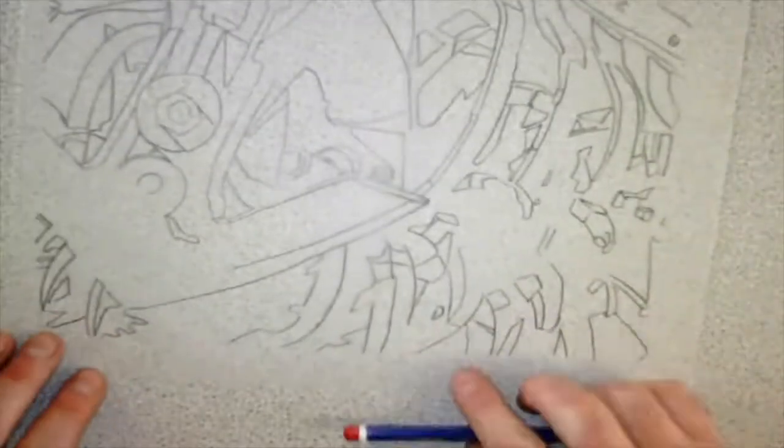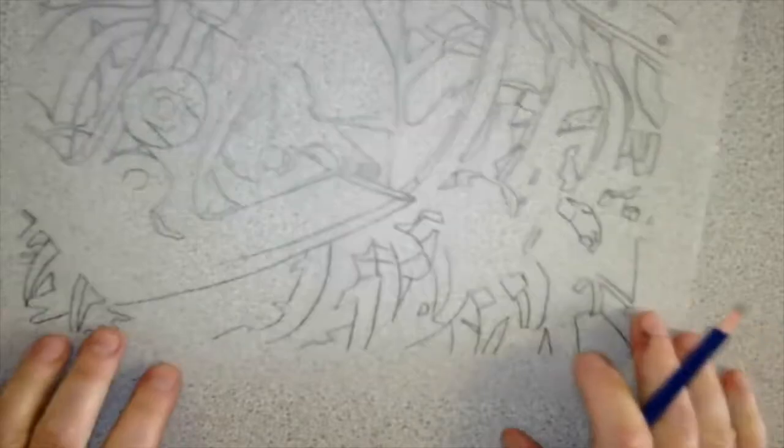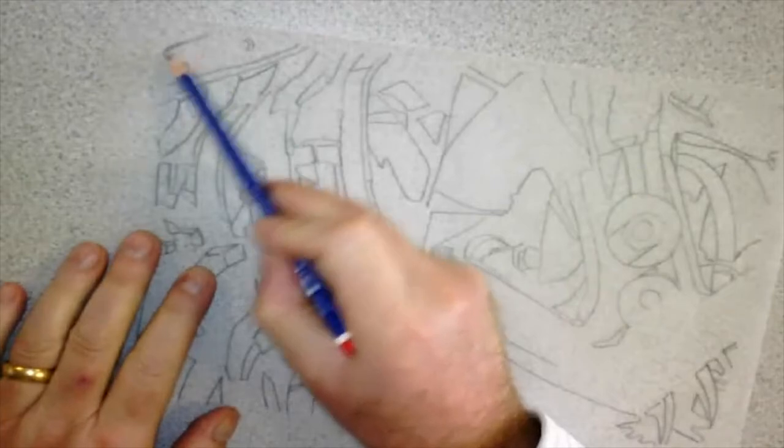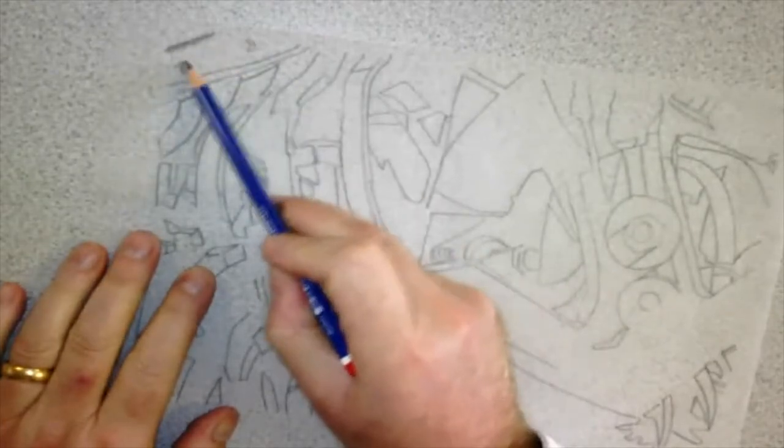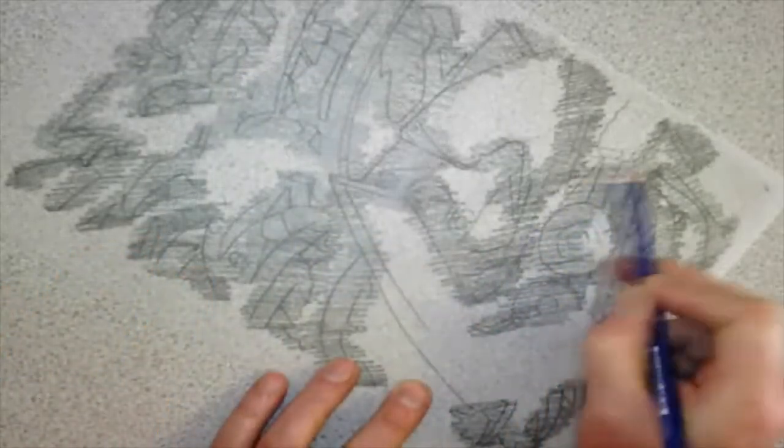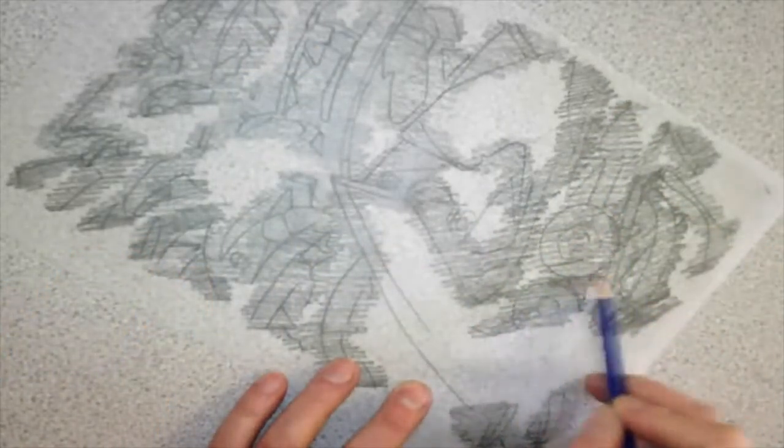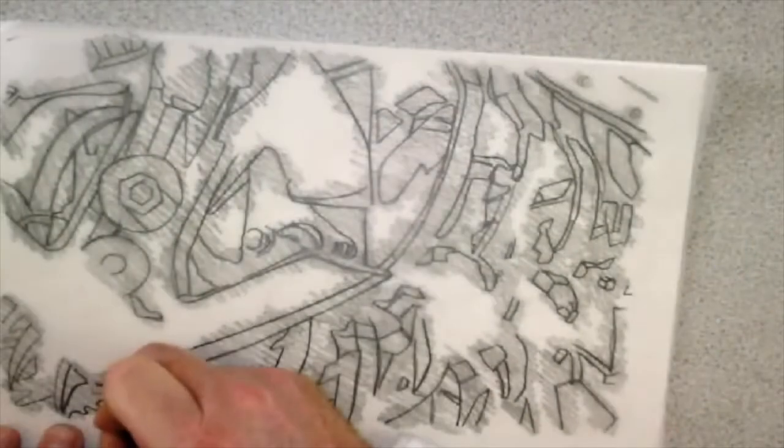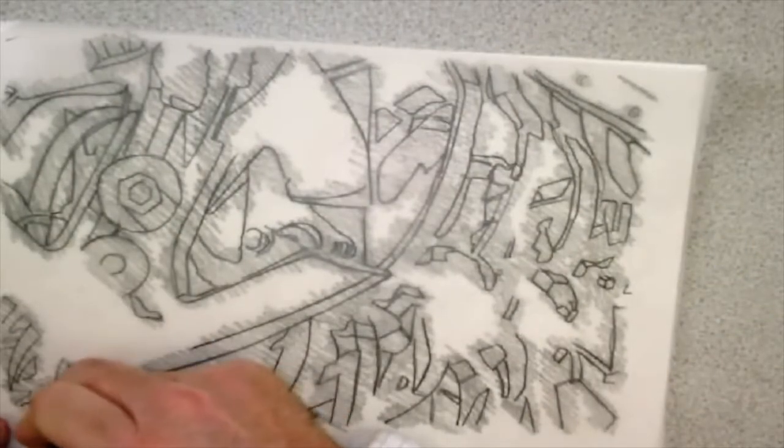Tracing shouldn't be rushed. I've sped up the process just so we're not watching the full extent of it, but it took about 20 minutes. Once the tracing is done you flip it over onto the reverse and then using the flat of the pencil shade over the back of all the lines, making sure you get a good coating of graphite.